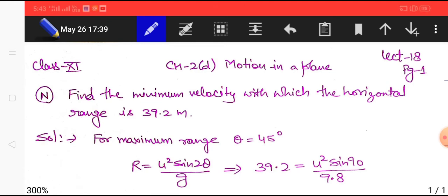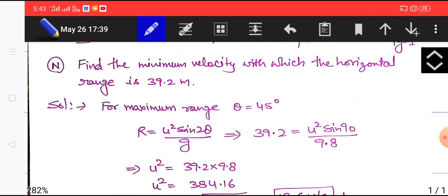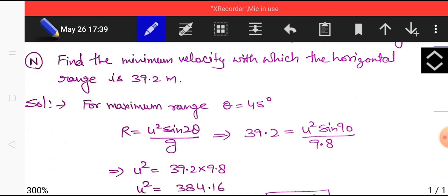In this I am going to discuss a couple of numericals based on angular projectile. The first numerical is find the minimum velocity with which the horizontal range is 39.2 meter.